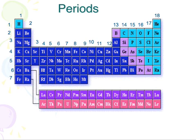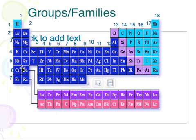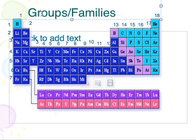Take a look at the periodic table — you'll notice a lot of numbers. Periods represent the rows, going from side to side. There are seven different periods. Then we have groups, also called families, which go down the table. There are 18 groups, numbered one through 18.